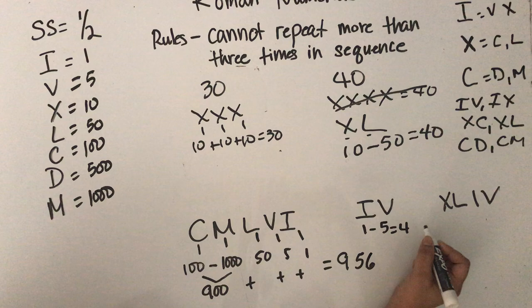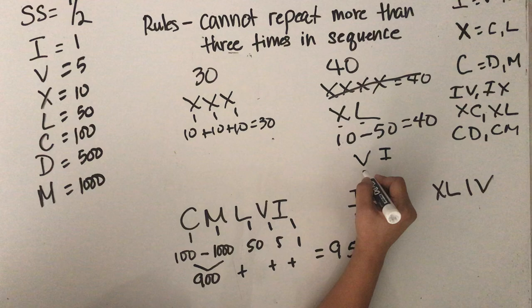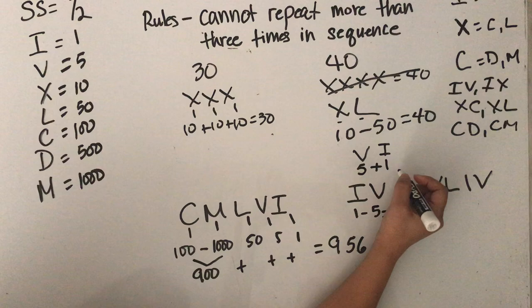Now if you do the opposite, V and I, V is larger than I, so 5 plus 1. So you add. If it's larger and then smaller, you do add. And that is 6.